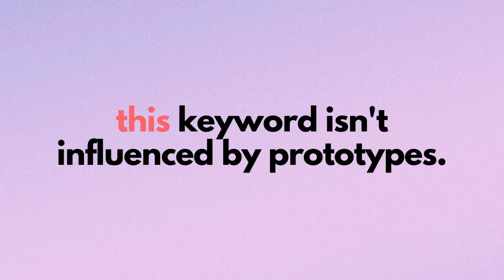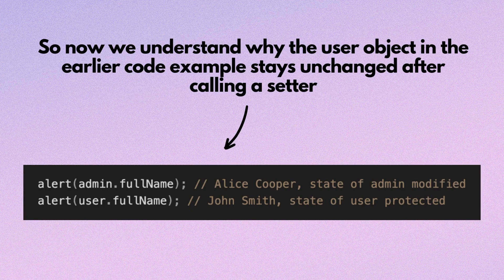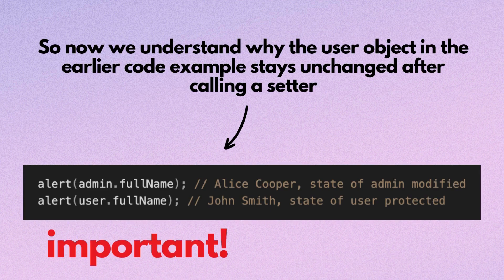The this keyword isn't influenced by prototypes. It always refers to the object that is before the dot. So now we understand why the user object in the earlier code example stays unchanged after calling a setter. Remember this — it's important.